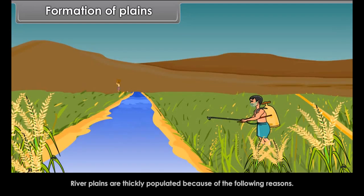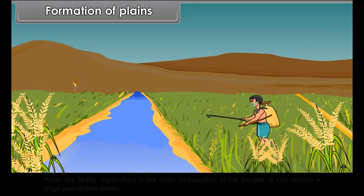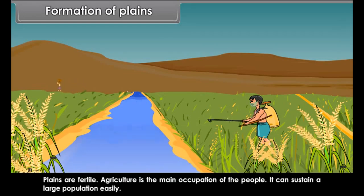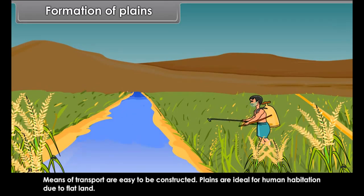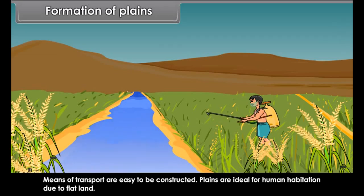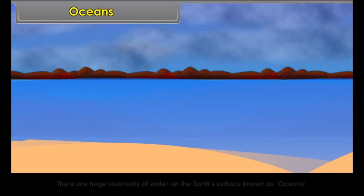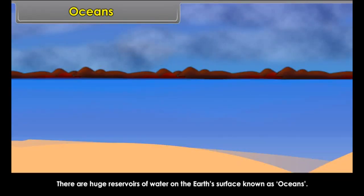Rivers and their tributaries bring silt and deposit it in low-lying areas, forming plains. River plains are thickly populated because plains are fertile, agriculture is the main occupation, and they can sustain a large population. Means of transport are easy to construct, and plains are ideal for human habitation due to their flat land.